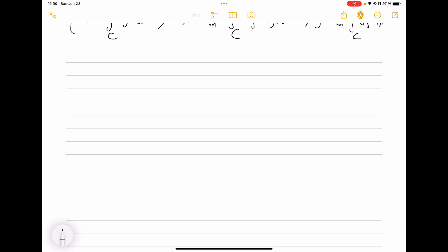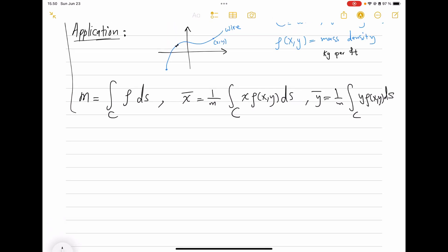And then the center with respect to x will be averaging the x values, right? You average x values along the curve. Of course, averaging is against the mass, and this will be ds. And ȳ will be averaging the y against the density along the curve.